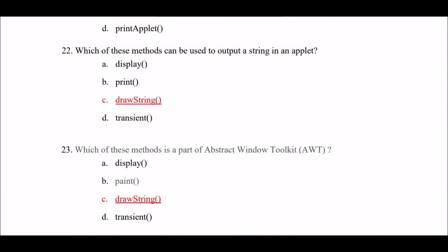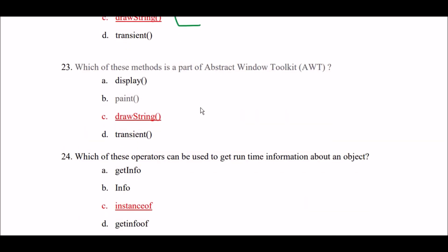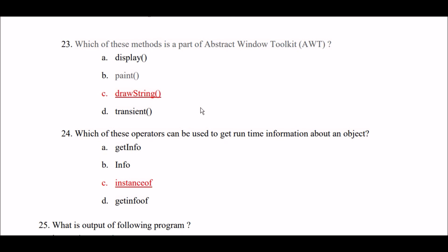Which of these methods can be used to output a string in an applet? Option A: display method. Option B: print method. Option C: drawString method. Option D: transient method. Right answer is Option C — drawString method can be used to output a string in an applet. Also, which of these methods is a part of Abstract Window Toolkit (AWT)? Right answer is also Option C — drawString method is a part of AWT.